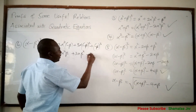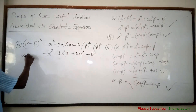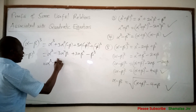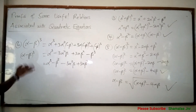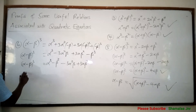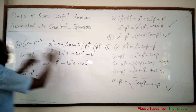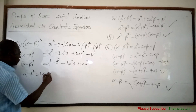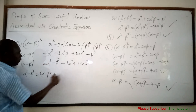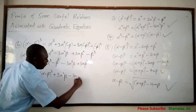So this gives alpha cubed minus 3 alpha squared beta plus 3 alpha beta squared minus beta cubed. Now, making alpha cubed minus beta cubed the subject: these two middle terms cross to the other side, so you have alpha cubed minus beta cubed equals alpha minus beta all cubed, plus 3 alpha squared beta, minus 3 alpha beta squared.